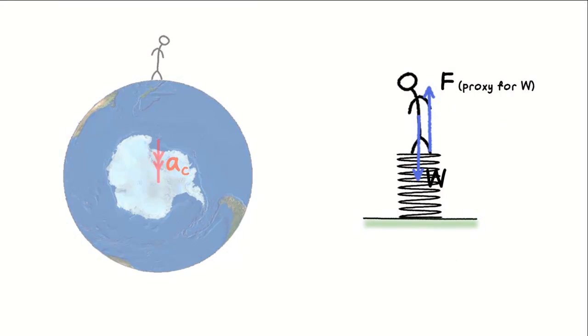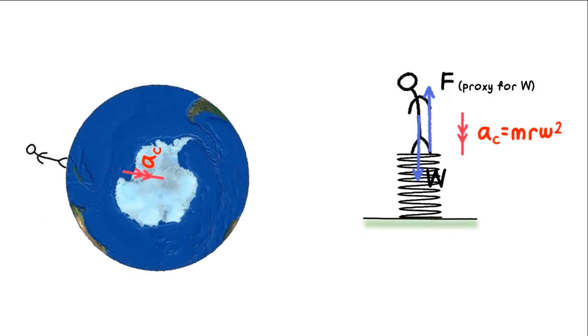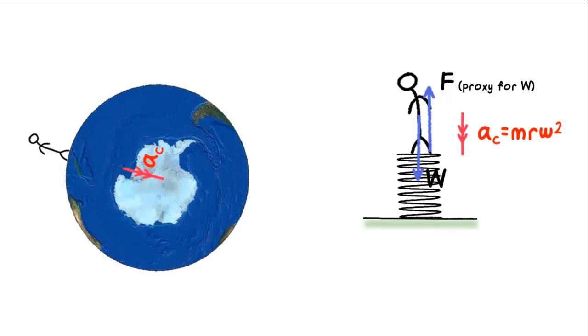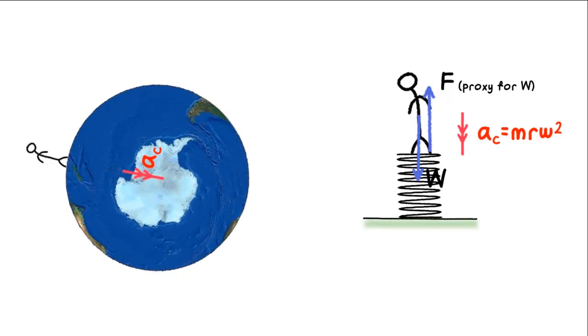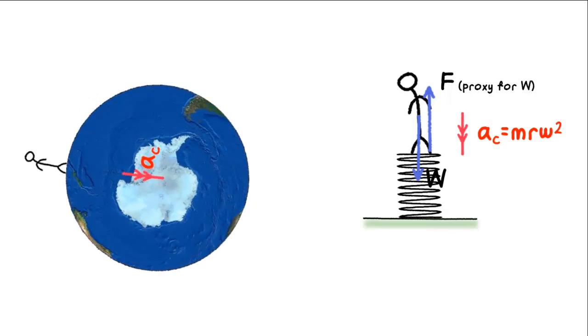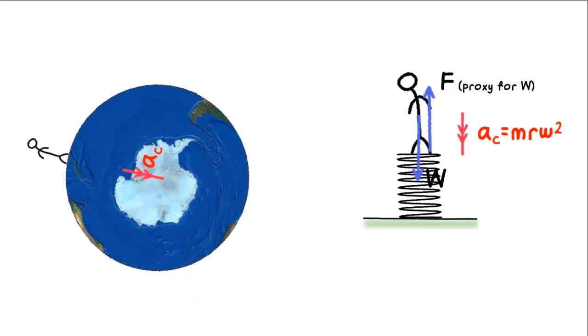However, if we are standing on the equator, our center of mass is actually moving in a circle with a radius of about 6,400 kilometers, completing one round in, you know it, 24 hours.